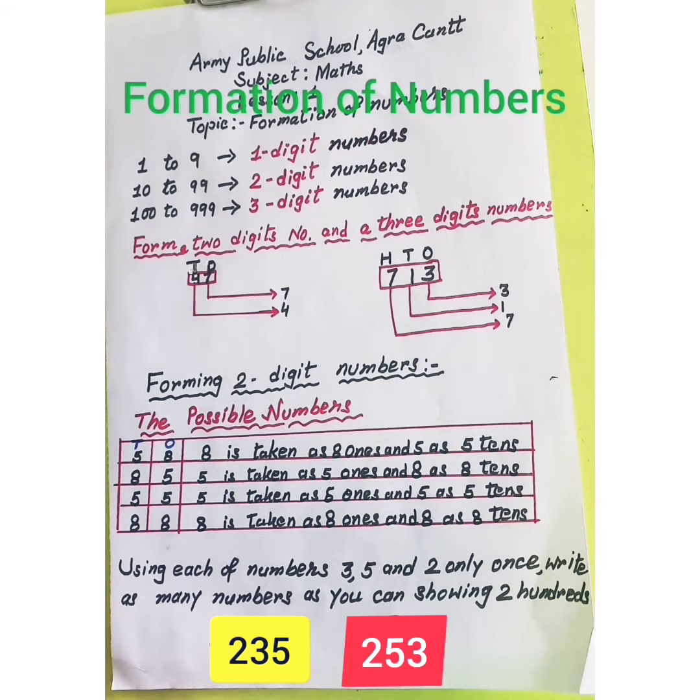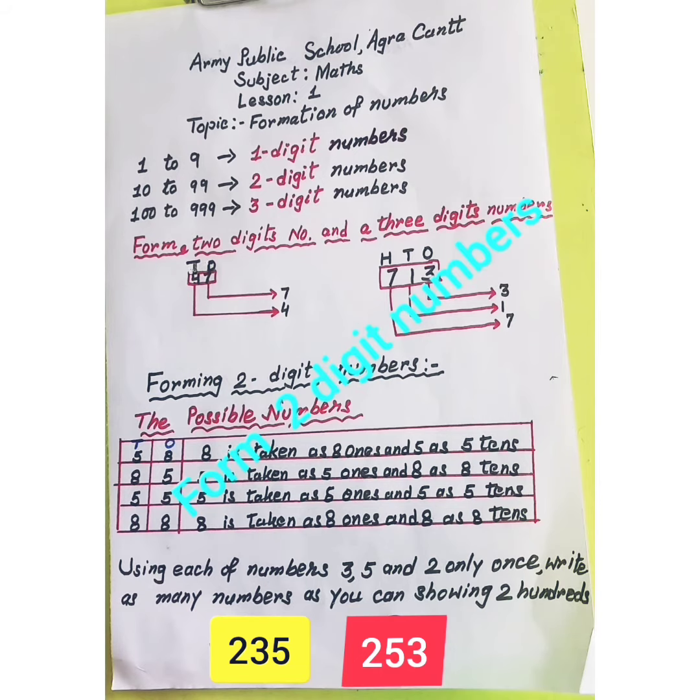We already know that 1 to 9 are all one-digit numbers, 10 to 99 are all two-digit numbers, and 100 to 999 are all three-digit numbers. Let's form a two-digit number and a three-digit number.